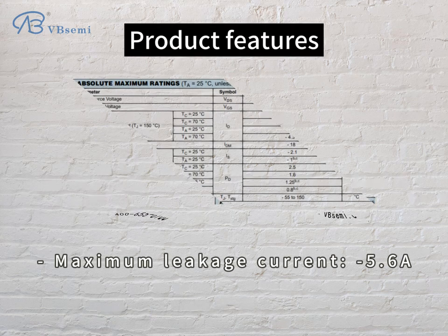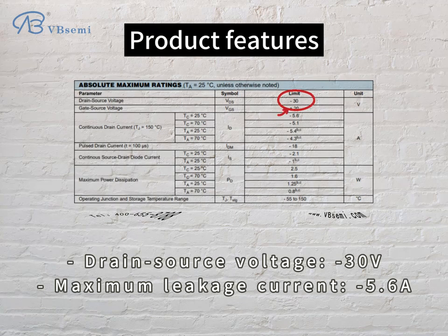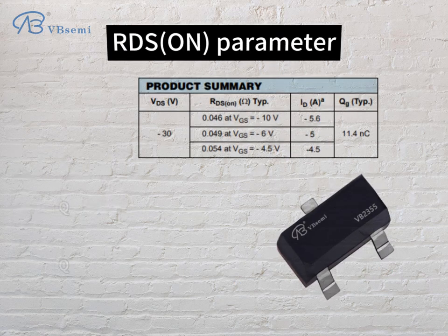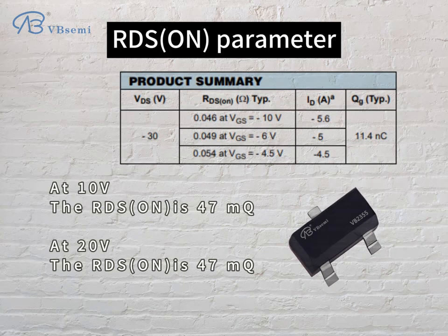Product features: Drain Source Voltage -30V, Maximum Drain Current -5.6A, Threshold Voltage -20V, Threshold Voltage -1V. For the RDS(on) parameter: at 10V the RDS(on) is 47mΩ, and at 20V the RDS(on) is 47mΩ.